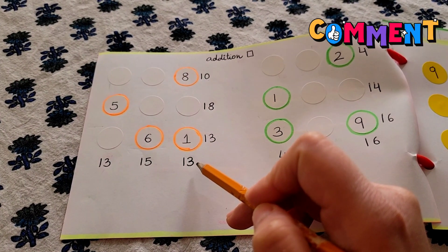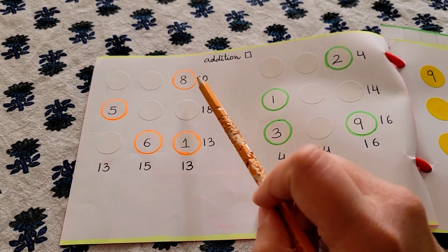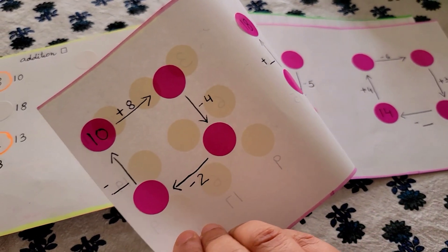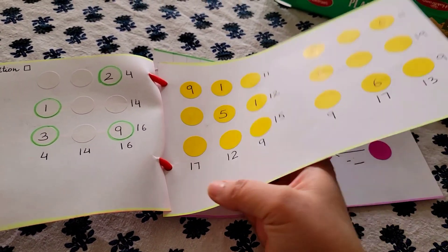So 9, 13 minus 9, whatever the answer is going to come here. So like this, they have to try and complete the grid. So we have approximately 6 questions or 4 questions based on that.